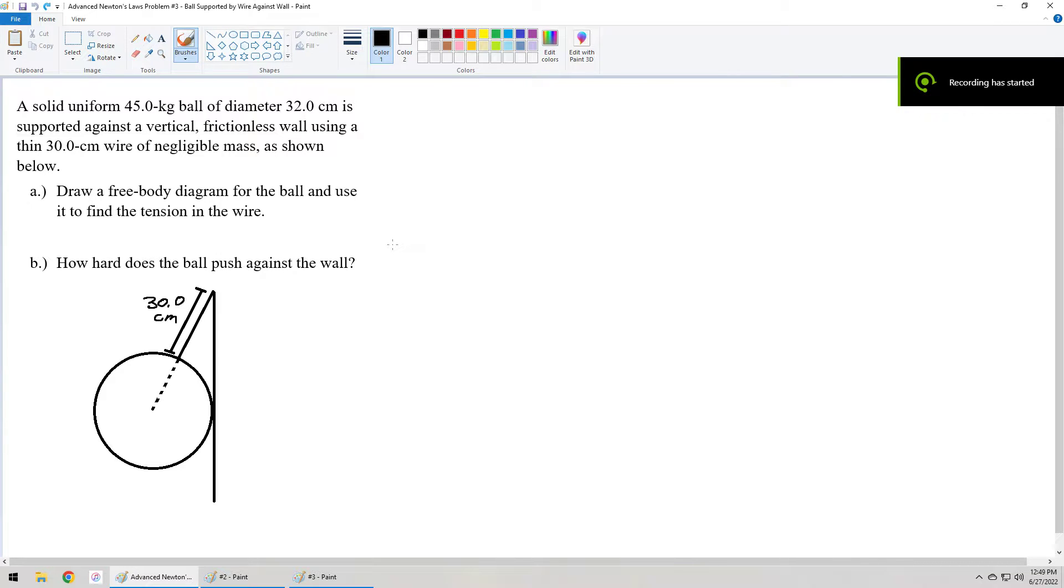Good afternoon everybody. We have a solid, uniform 45 kg ball of diameter 32 cm which is supported against a vertical frictionless wall using a thin 30 cm wire. We have to draw the free body diagram for the ball and then use that to find the tension and then solve for how hard the ball pushes against the wall.